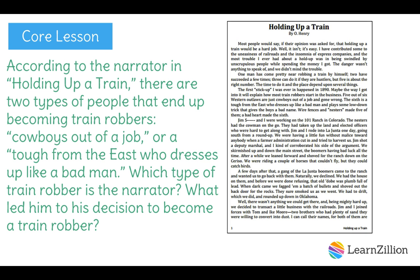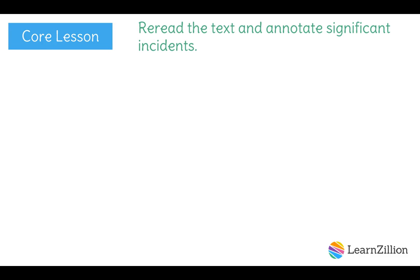I'm going to reread the first page because I know that this is the part of the story where the narrator tells us the events that led up to his first train robbery. The narrator begins outlining the two different types of people that become train robbers when he begins talking about how he got into it in paragraph three. Then in paragraph six, the narrator states, 'we decided to transact a little business with the railroads,' and this is how I know he has made his decision to rob a train and become an outlaw. So I'm going to reread the first page and annotate any incidents or interactions that seemed significant or that led up to the narrator's decision to become an outlaw.